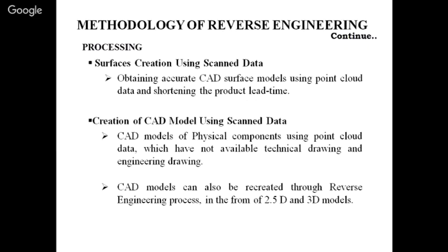After that we have the processing stage. In processing we have the creation of a surface model, 2D model, or 2.5D model. For surface creation, we obtain accurate CAD surface models using point cloud data to reduce product lead time, creating a CAD model of a physical component from point cloud data even where no technical drawing or engineering drawing is available. A CAD model can be recreated through the reverse engineering process in the form of 2.5D and 3D models.